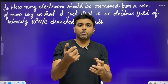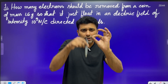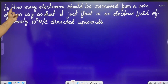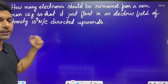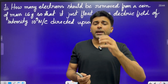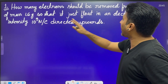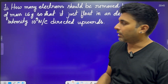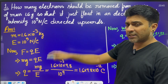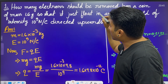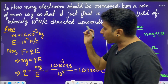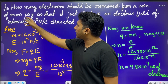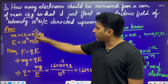For the coin to float, the electrostatic force must balance the gravitational force. The coin has a definite weight. If we remove electrons from the coin, it acquires a positive charge, and the upward electric field exerts an upward electrostatic force. Given the mass is 1.6 grams, we convert that to 1.6 × 10⁻³ kg. The electric field E is 10⁹ Newton per Coulomb.